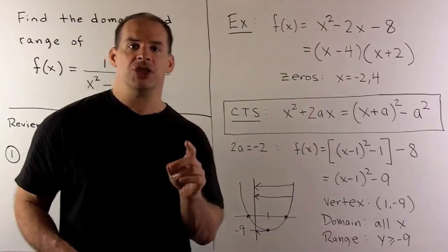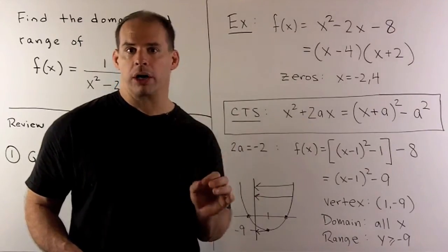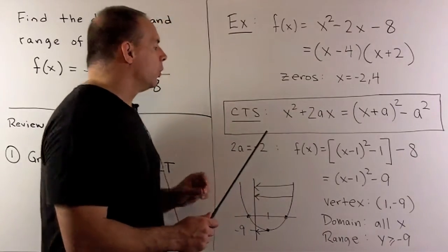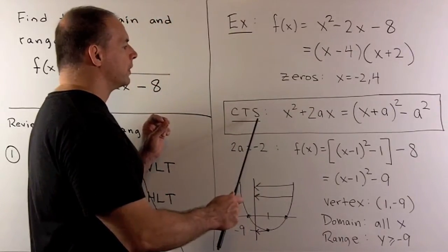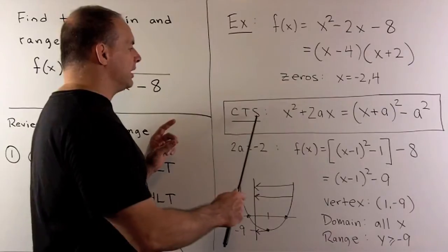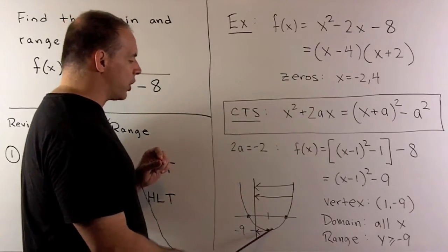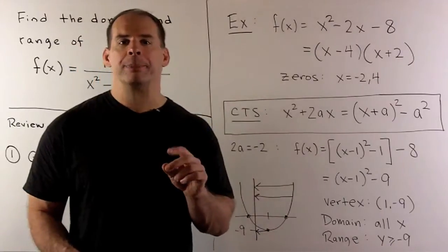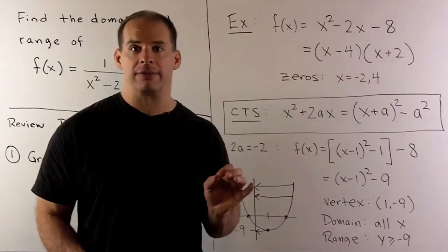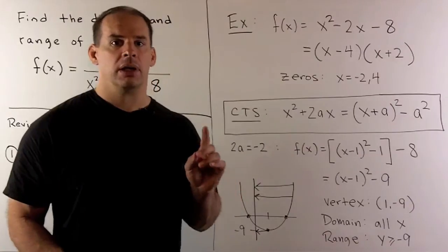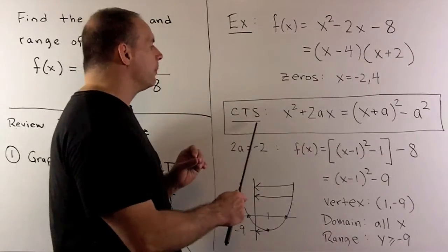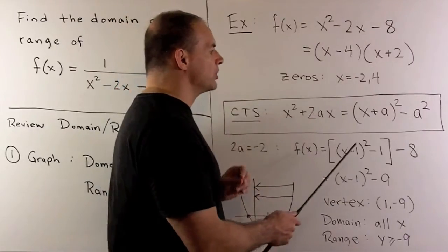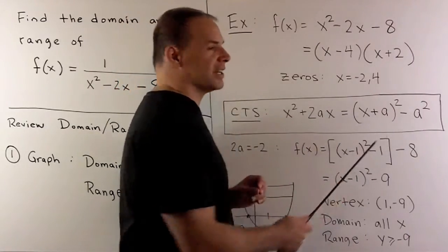To find the range, we need to do a little bit more work. In the case of a parabola, we need to complete the square. The idea is that if I complete the square, I can find the vertex. Once I have that, I know the smallest value of y where the horizontal line through y cuts our graph. To review completing the square, our formula is x² + 2ax = (x + a)² - a².